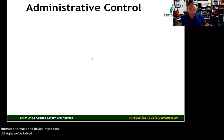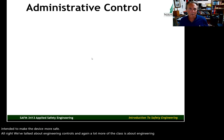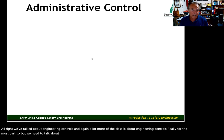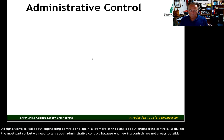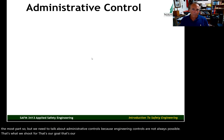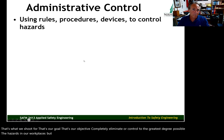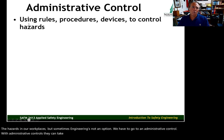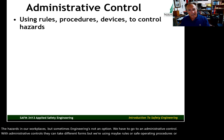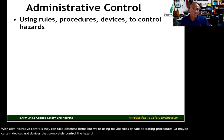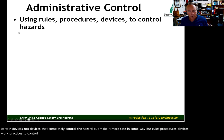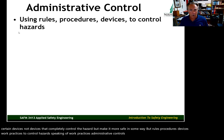We've talked about engineering controls, but engineering controls are not always possible. Sometimes we have to go to an administrative control. With administrative controls, we're using rules, safe operating procedures, or certain devices — not ones that completely control the hazard, but that make things more safe. Administrative controls are also referred to as work practice controls.